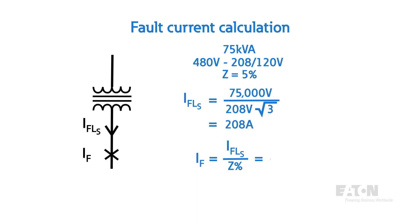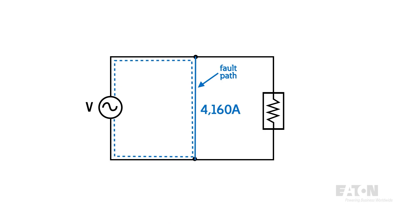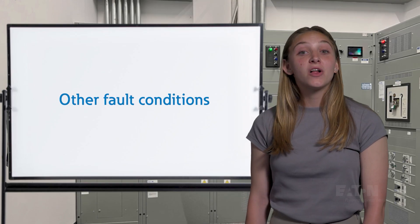Therefore, dividing 208 by 0.05 or multiplying by 20 gives a good approximation of available fault current, or 4,160 amps in this case, which is more than enough to melt a lot of cable and damage a lot of equipment.